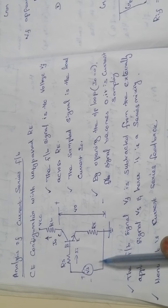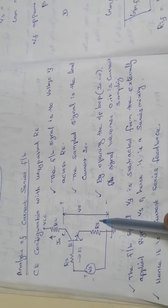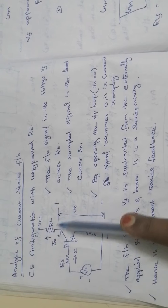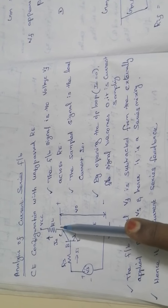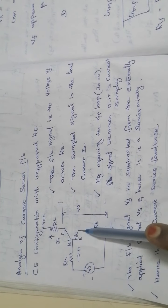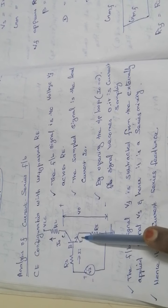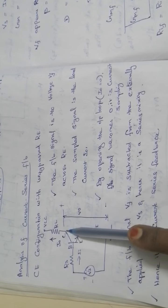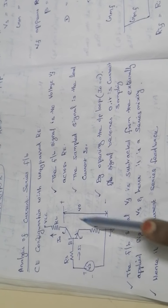If it is current sampling, the output voltage and the feedback voltage are at different terminals. But in voltage sampling, the output voltage as well as the feedback voltage are at the same terminal. In this circuit, the output voltage and feedback voltage are at different terminals, so it is called current sampling.